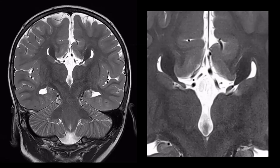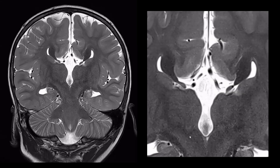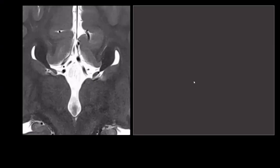The two white matter bundles visible here should normally be connected to one another as the corpus callosum. Because there is no corpus callosum, white matter has developed into two thick bundles running medially to the lateral ventricles, causing this bizarre morphology. These are called the Probst bundles — essentially axons that want to cross the midline but cannot, and so run medially of the lateral ventricles.